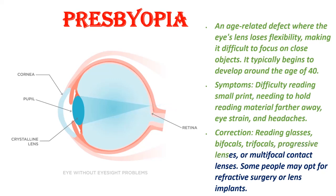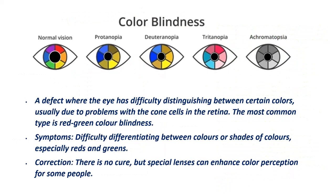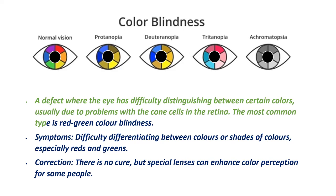Some people may opt for refractive surgery or lens implants. Color vision deficiency (color blindness): A defect where the eye has difficulty distinguishing between certain colors, usually due to a problem with the cone cells in the retina. The most common type is red-green color blindness. Symptoms include difficulty differentiating between colors or shades, especially reds and greens. There is no cure, but special lenses or glasses can enhance color perception for some people.